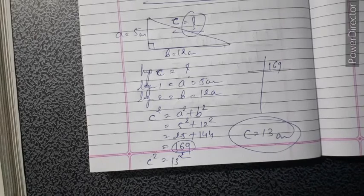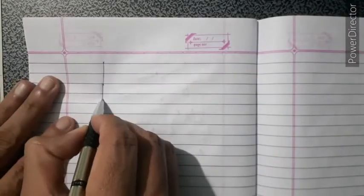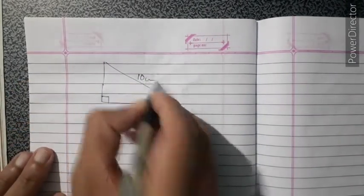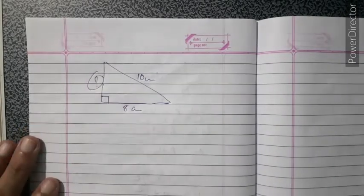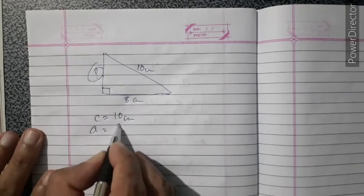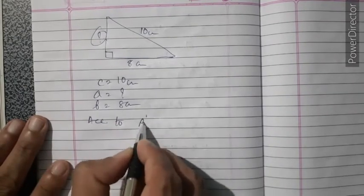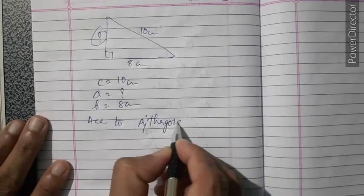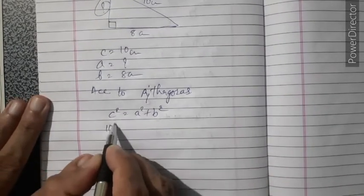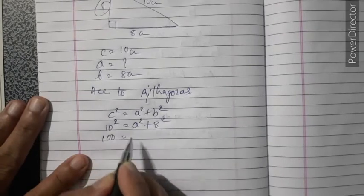Sometimes the measurement of the hypotenuse is given and one side is not given. For example: a right angle triangle has hypotenuse = 10 cm and one side = 8 cm; find the missing side. So c = 10 cm, a = ?, b = 8 cm. According to Pythagoras: c² = a² + b², so 10² = a² + 8².